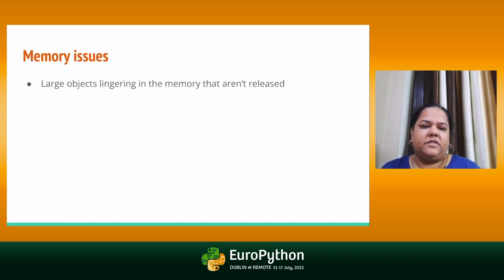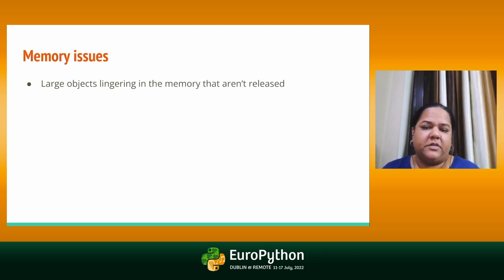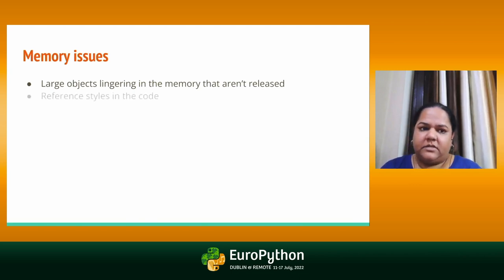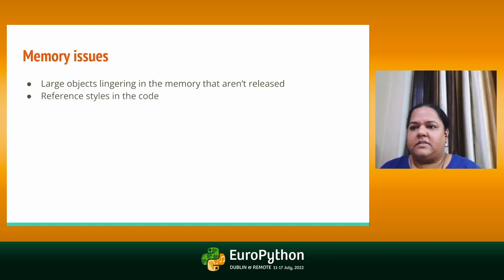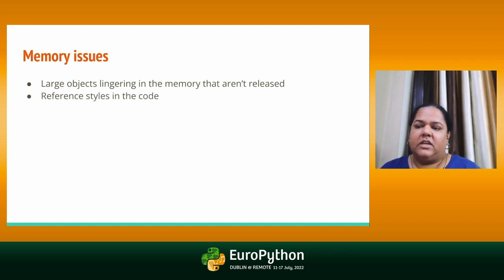Sometimes we have large objects — let's say we created a very big list or very big dictionary. For any computation, maybe we are passing a large log file, but even when we are out of that function it is still lingering in the memory and that memory is not being released. This is hanging around for no current reason. There can be other reasons like reference styling in your code. Assigning references don't create distinct duplicate objects, but if an object is no longer used and cannot be marked for garbage collection because it is being referenced in another place within the application, it results in a memory leak.